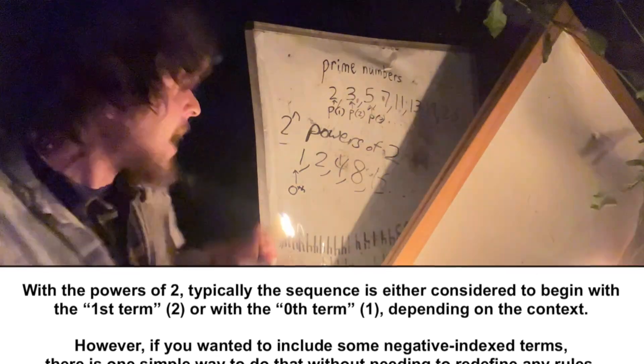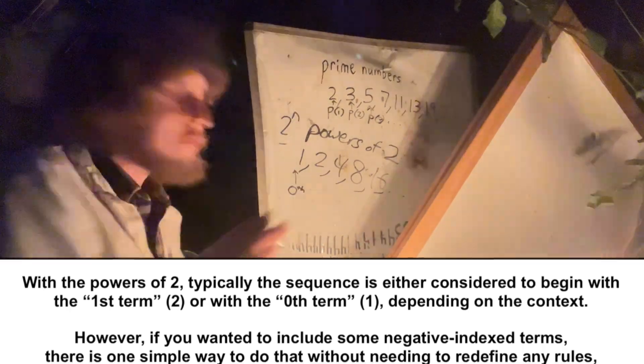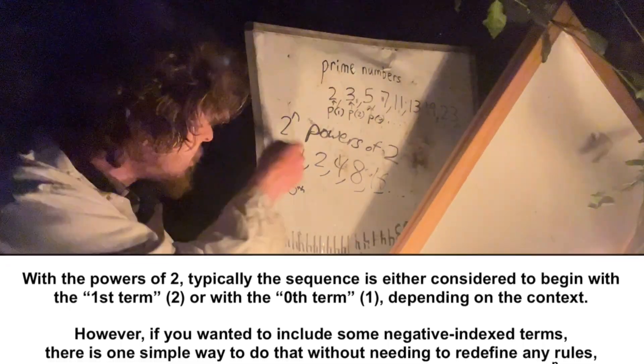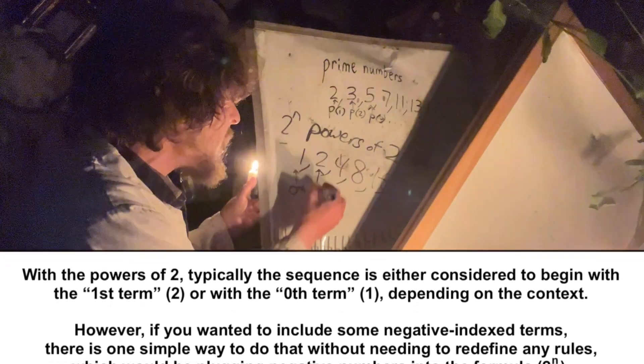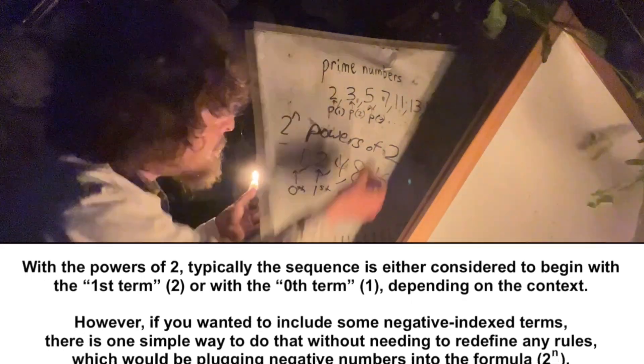It makes a lot of sense to say that this is the zeroeth term, which sometimes is ignored from lists of the powers of two, and other times it's noted that the sequence is starting from that earlier point to include the one, and then we have the first term.